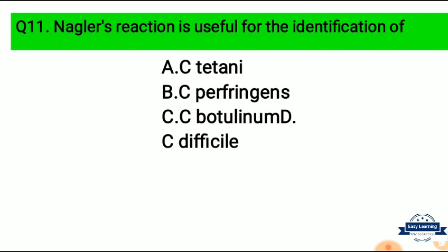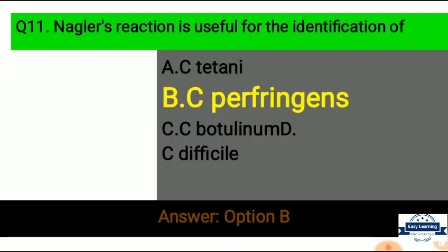Question 11: Nagler's reaction is useful for the identification of — Option A: Clostridium tetani, Option B: Clostridium perfringens, Option C: Clostridium botulinum, Option D: Clostridium difficile. Correct answer is Option B, Clostridium perfringens. The Nagler's reaction is useful for the identification of Clostridium perfringens.